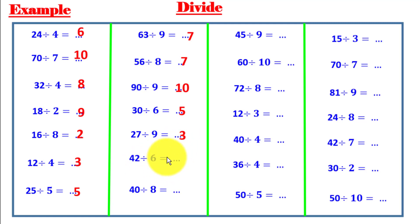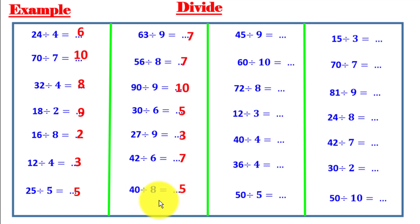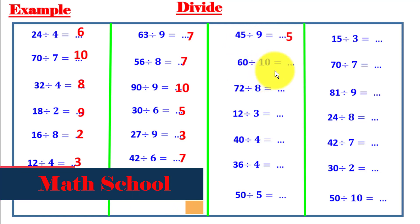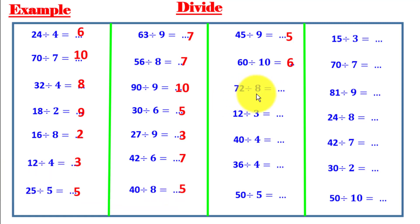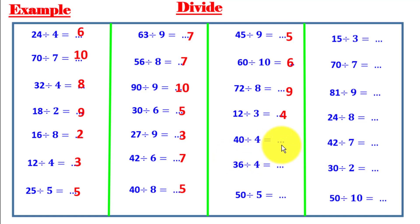42 divided by 6 equals 7, because 7 times 6 equals 42. 40 divided by 8 equals 5, because 5 times 8 equals 40. 10 times 4 also equals 40. 45 divided by 9 equals 5. 60 divided by 10 equals 6. 72 divided by 9 — 8 times 9 equals 72, so 72 divided by 8 equals 9. 12 divided by 3 equals 4. 40 divided by 4 equals 10. 36 divided by 4 equals 9, and 6 times 6 also equals 36.